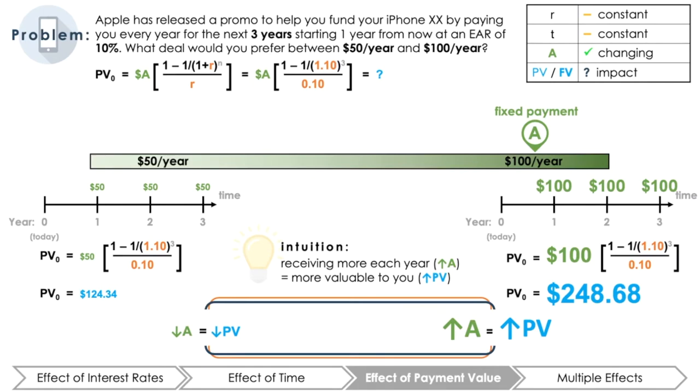Here, we can define the positive relationship that exists between A and PV. As A increases, PV also increases. Maybe your dad was right when he told you that you should not only start saving early, but also to save a large sum of money each time.